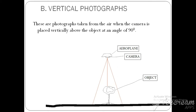As we can see in that diagram there, this is the aeroplane — it has a camera. Down there is a tree, so the aeroplane's camera is capturing that object, that tree. You can see the angle there: this is 90 degrees. The object is vertically below the camera at an angle of 90 degrees, so the type of photograph which is going to be taken is what we call the vertical photograph.